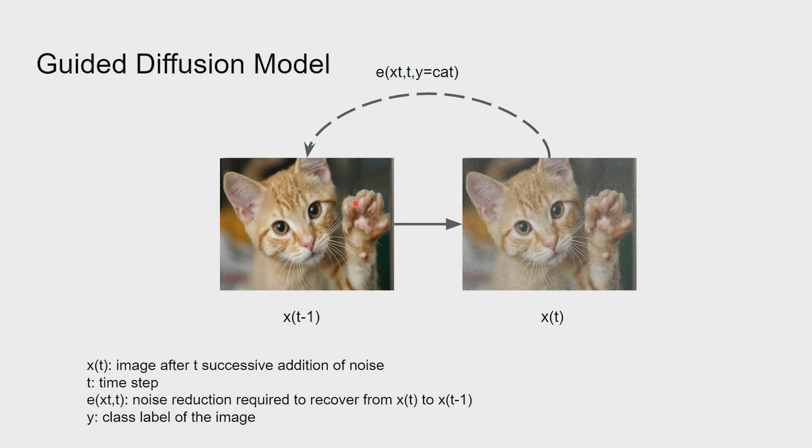But that's not all. We can guide our diffusion model to generate a certain kind of image. Let's start again with the image dataset, but given the class labels for each image this time. The model would be trained to predict the previous sharper image, given the image with noise, the time step, and the class label for the image. For example, in this case, the image label would be cat.